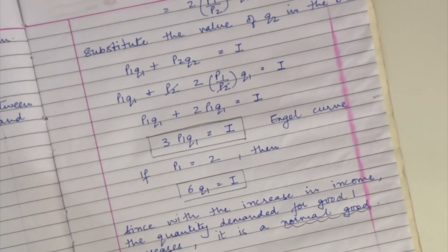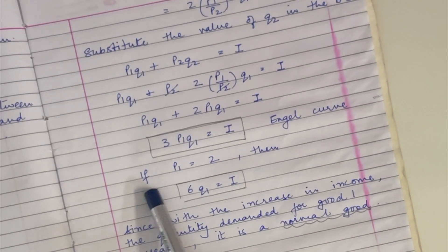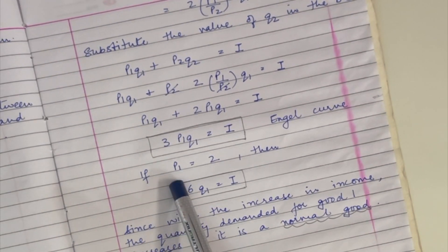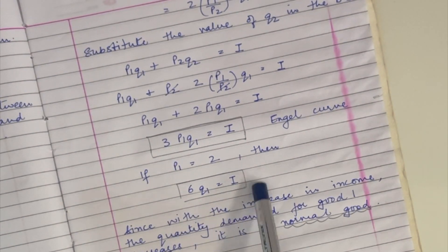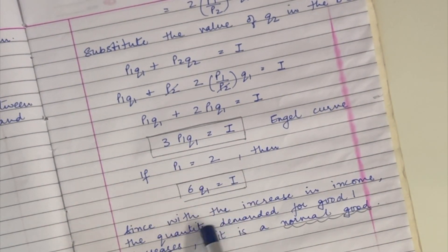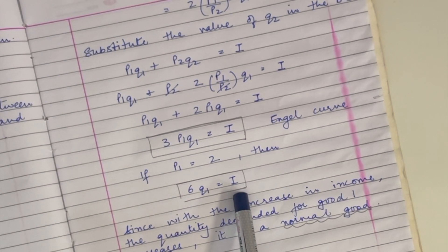If I have the value of p1, I just substitute it. Let's say p1 equals 2, then I get 6 q1 equals y as my Engel curve. Now one more thing that we can derive from here or conclude from here is that